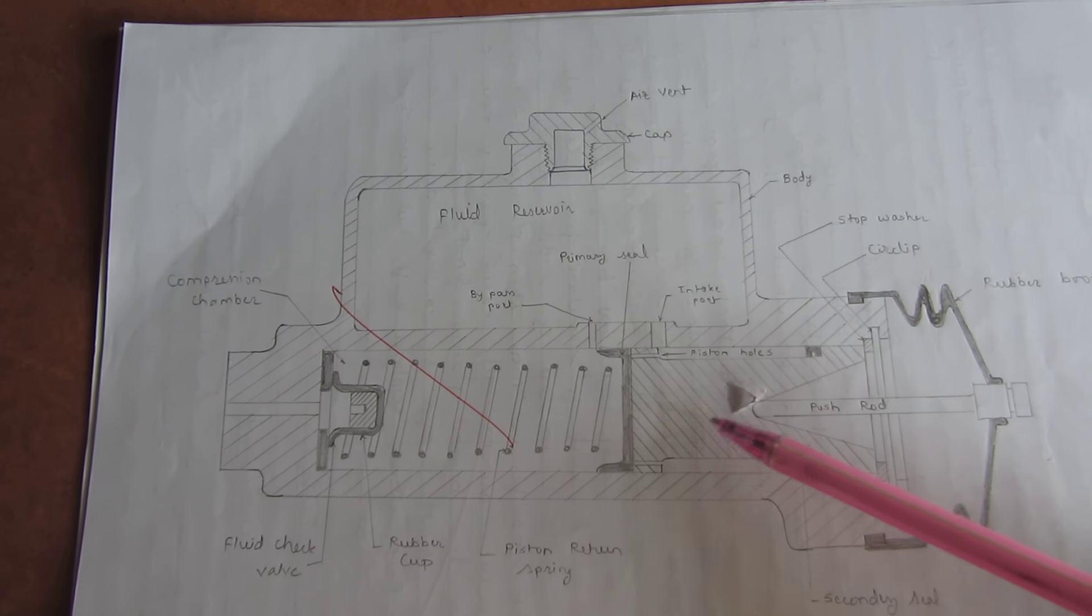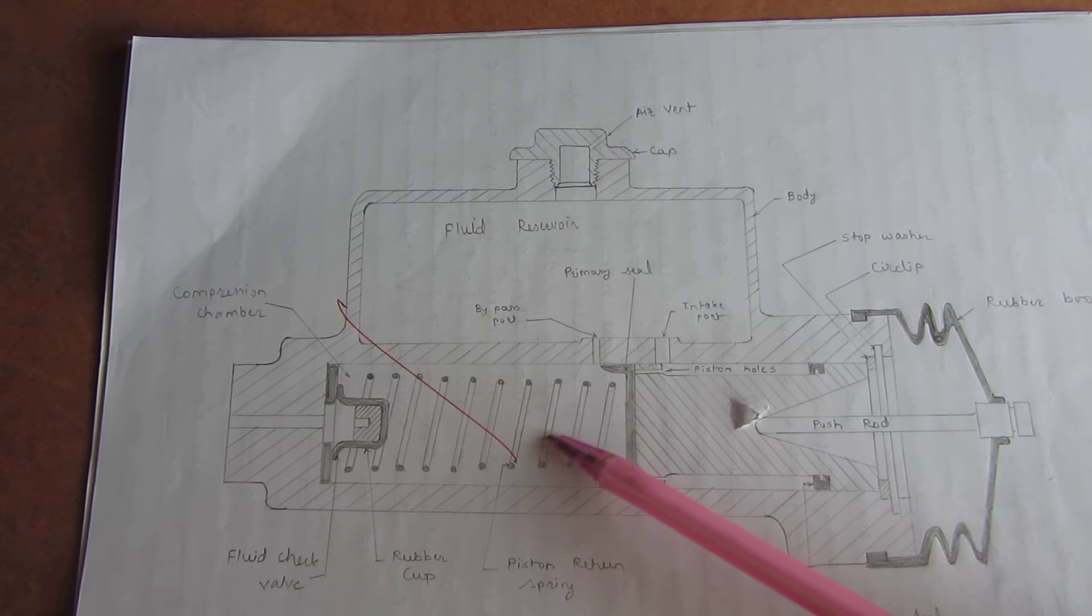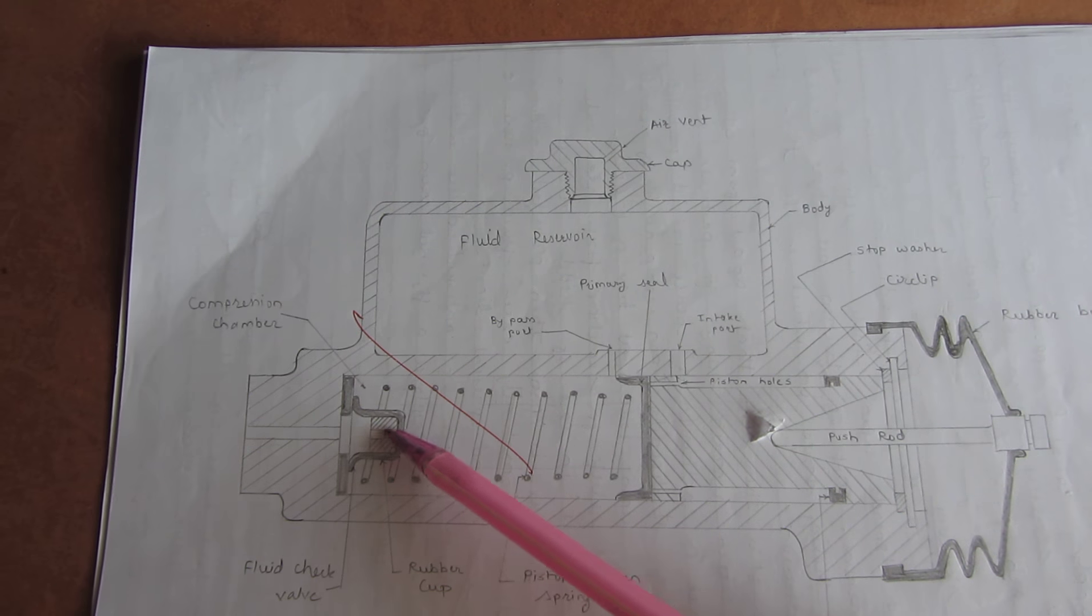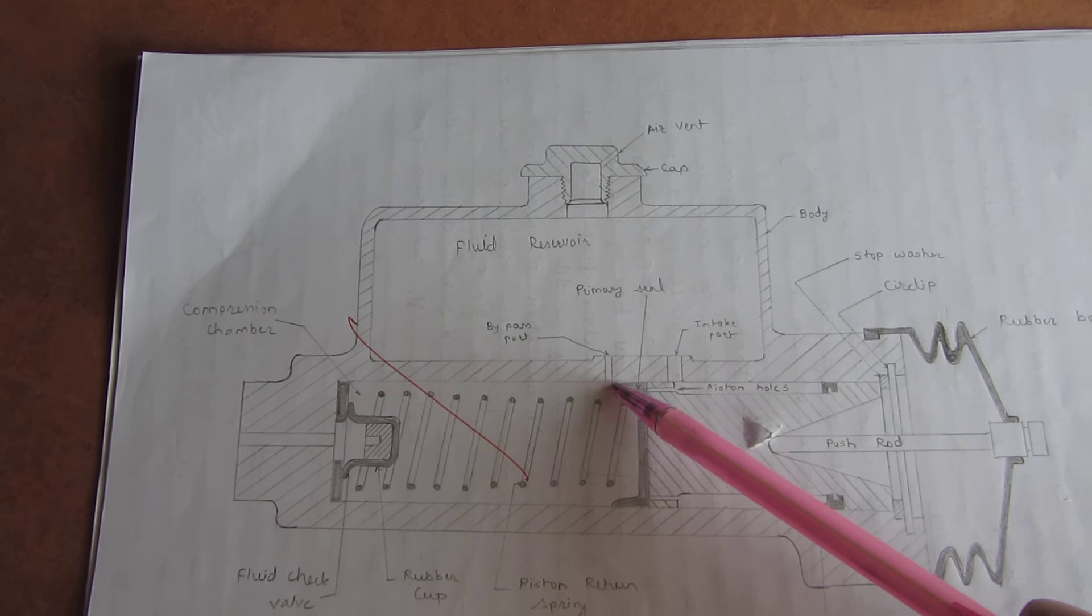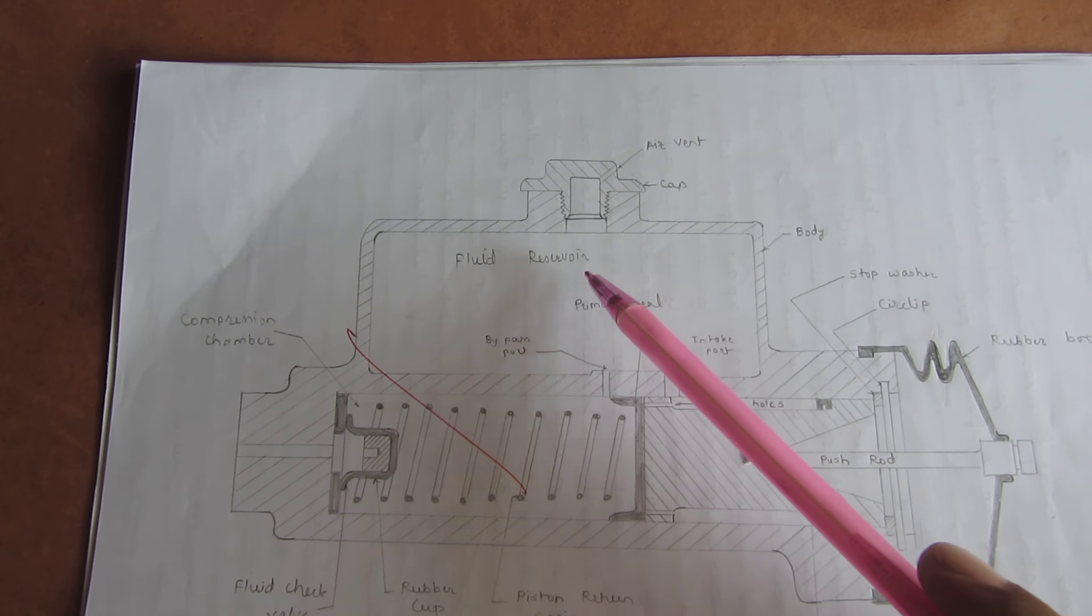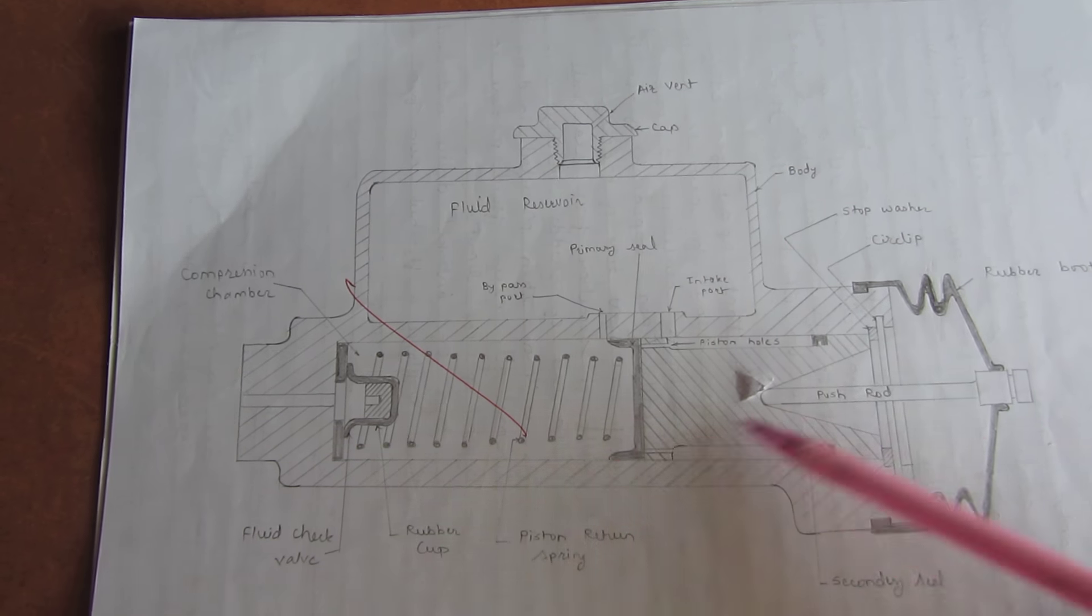Let's see first construction of master cylinder. This is a piston used for compressing the fluid in the chamber. This is a return spring. This is a check valve used to get ultimate pressure. This is a bypass port. This is intake port. This is a reservoir which maintains the amount of fluid inside the compression chamber. This is the casing.